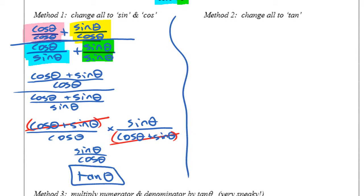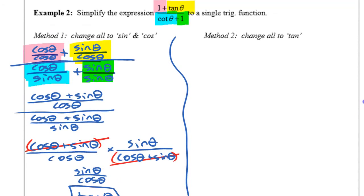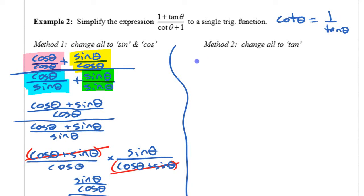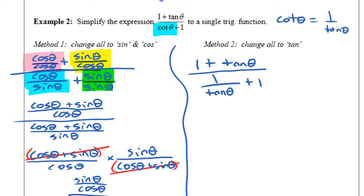Now let's do the second method, which is changing everything to tangent. The reason that's a good choice here is because the only things involved are tangent and cotangent, and you have an identity that relates those two: cotangent is 1 over tangent. If there were other trig functions involved, this might not be the best method, but since you only have those two, it works well. So I'm going to write the top exactly as is — 1 plus tan theta — but on the bottom I'm going to change that cotangent to 1 over tangent. The only thing I changed was that cotangent to 1 over tangent.